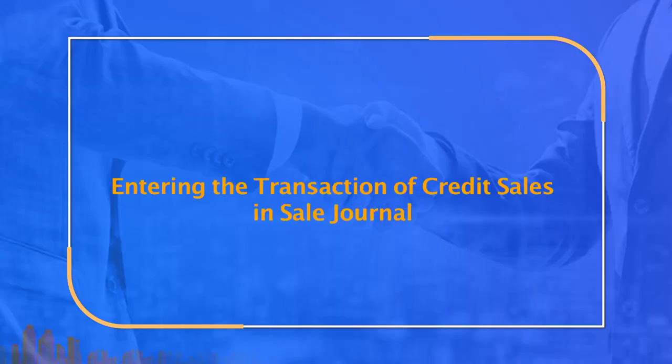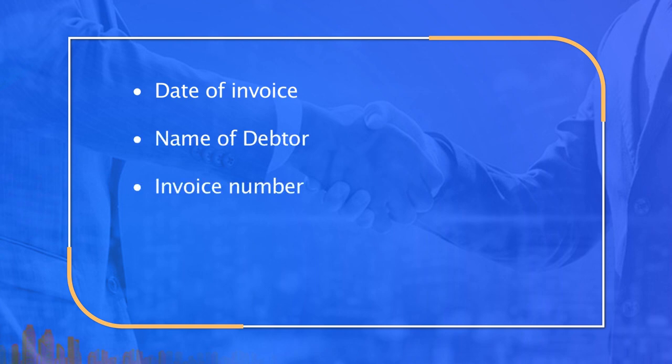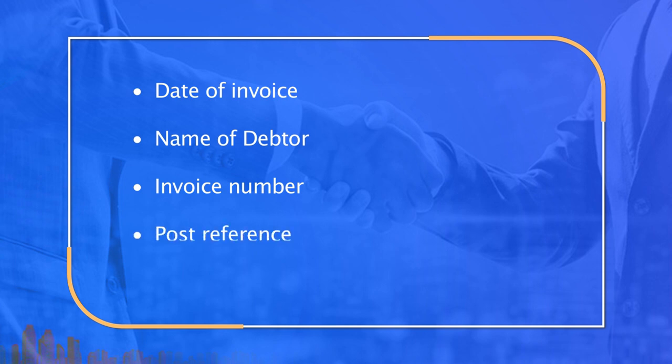In case of credit sales, the business is very much interested in the name and address of the credit customer — that is the debtor. The sales journal is designed to cover information like: date of invoice, name of the debtor, invoice number — which helps to trace other details — post reference, page number of the subsidiary ledger, and amount of invoice net of trade discount.